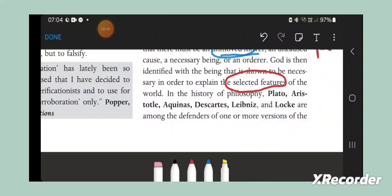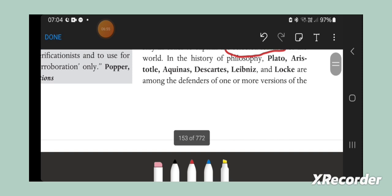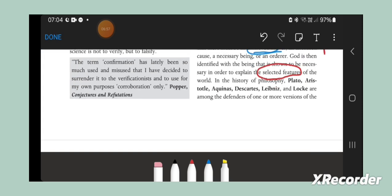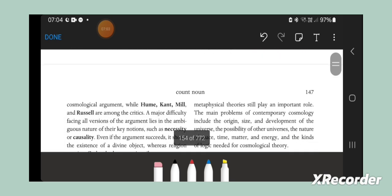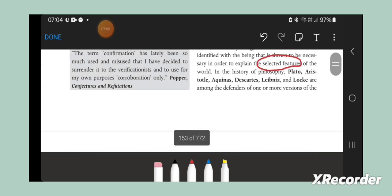Let's take Leibniz and Locke. You can put in Ibn Sina, Ghazali, and all those people who are among the defenders of one or more versions of the ontological arguments.